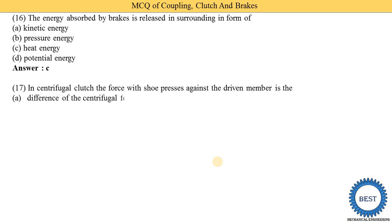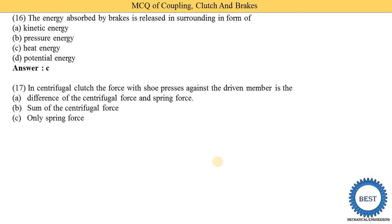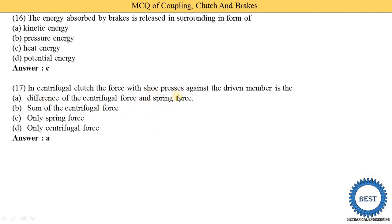In a centrifugal clutch, the force with which the shoe presses against the driven member is — option A: difference of centrifugal force and spring force, option B: sum of centrifugal force, option C: only spring force, option D: only centrifugal force. The correct answer is option A — the difference of centrifugal force and spring force equals the force with which the shoe presses against the driven member.